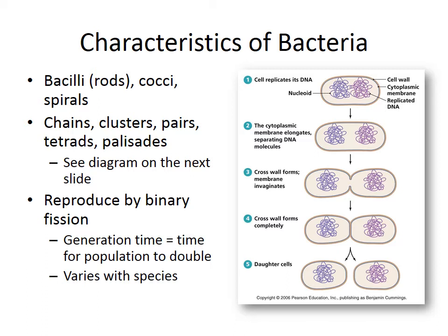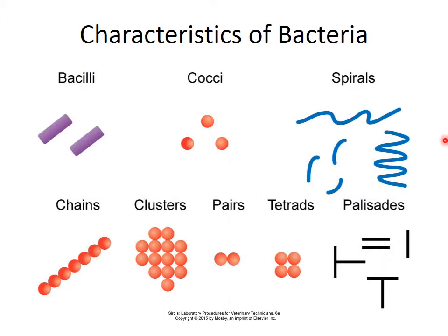Bacteria tend to reproduce by binary fission. The cell replicates its DNA, the nucleoid gets replicated, then the membrane elongates, the wall forms completely, and we get daughter cells. A term you might hear is generation time — that's the time for the population to double. So if we have six bacteria, it's the time it takes to get to twelve. This varies by species.